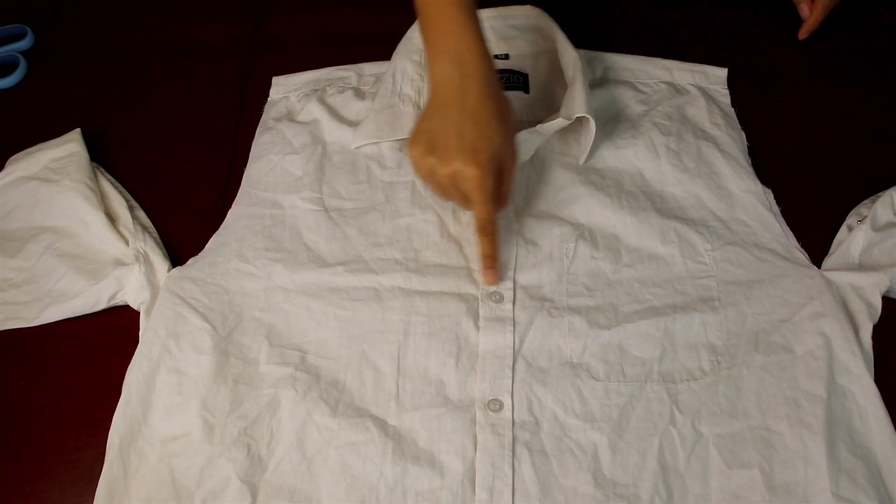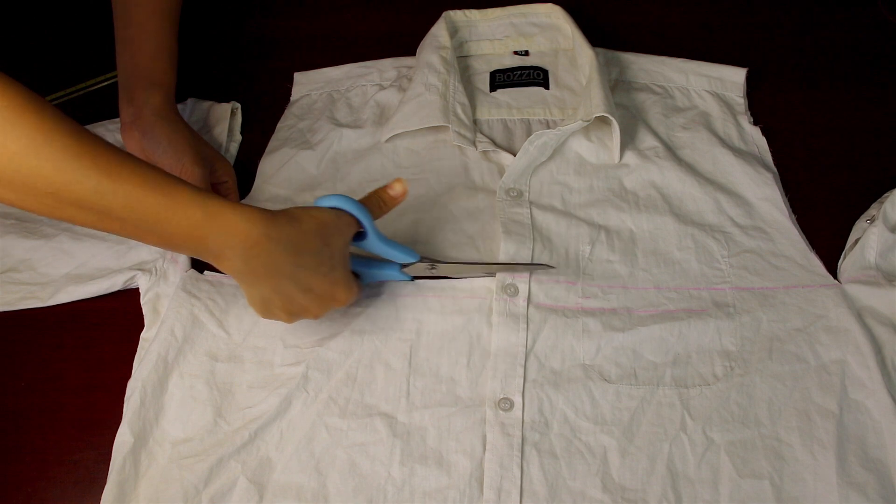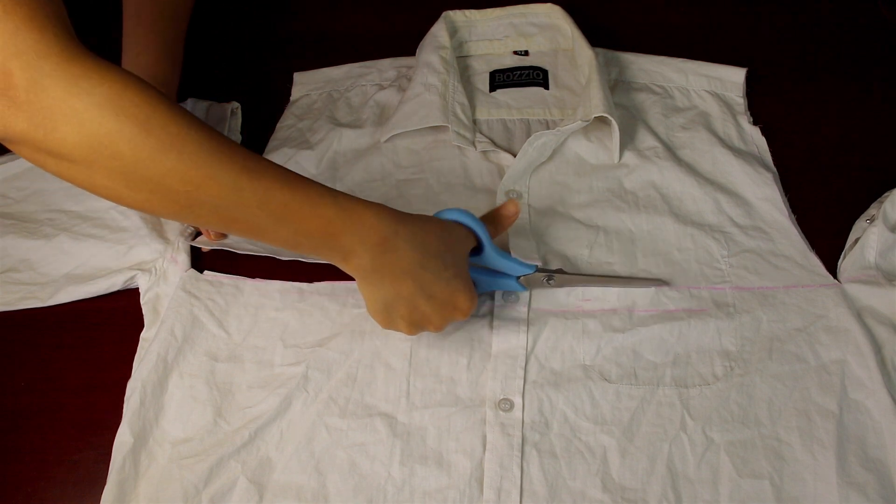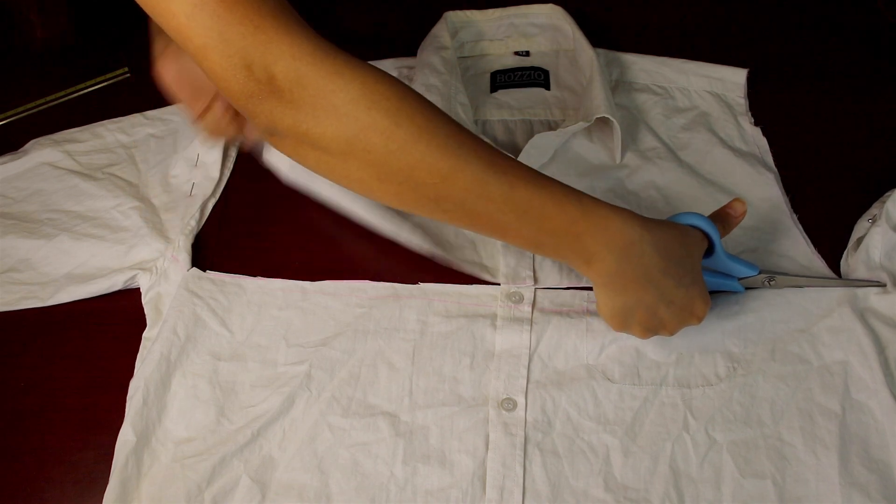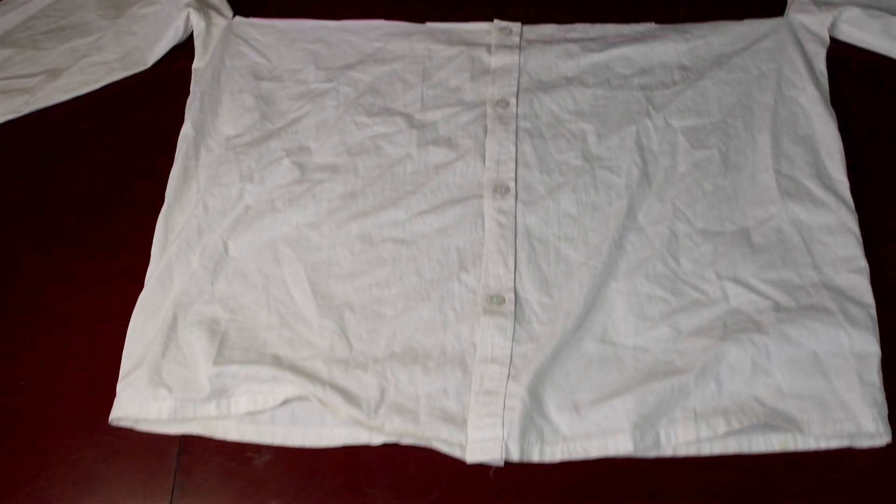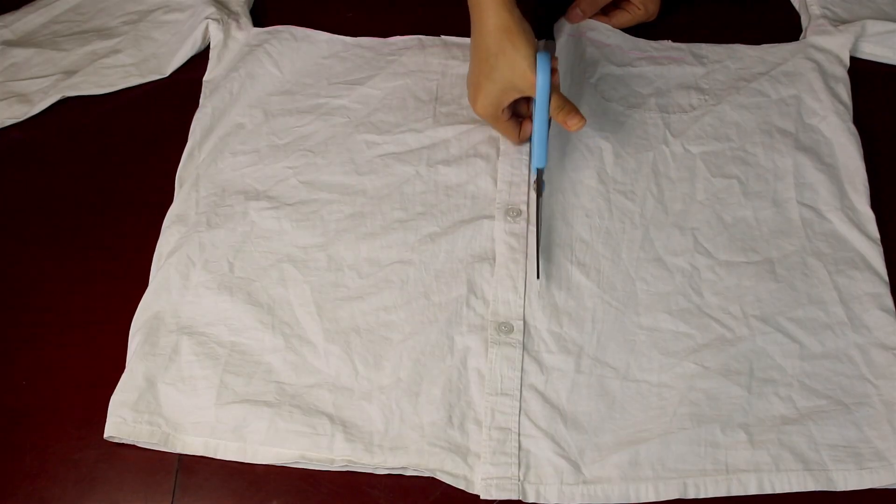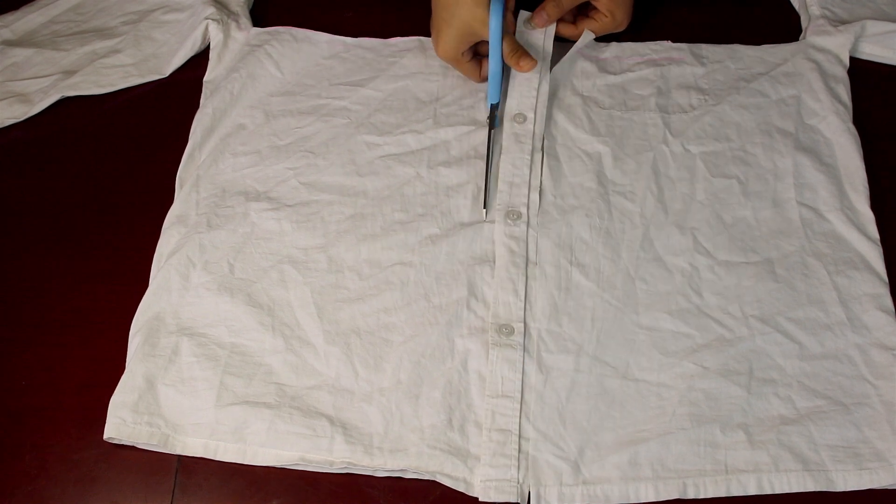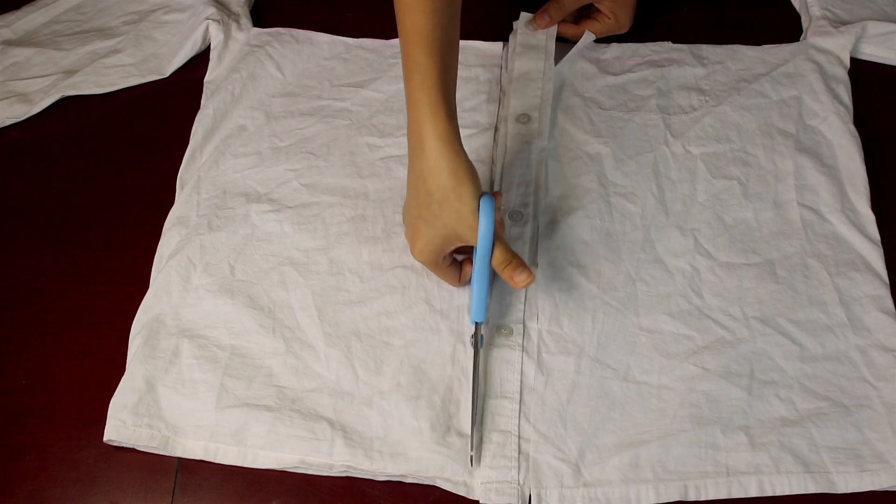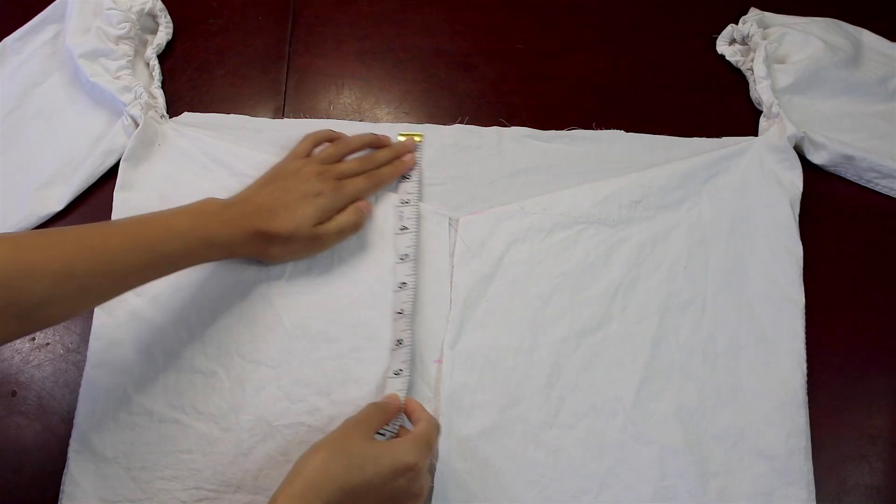From one sleeve to the other, I'm going to cut out the chest part of the shirt because we won't need that anymore. Also going to cut out the button line from the front part of the shirt. Just make sure to save it for later because we are going to need it.